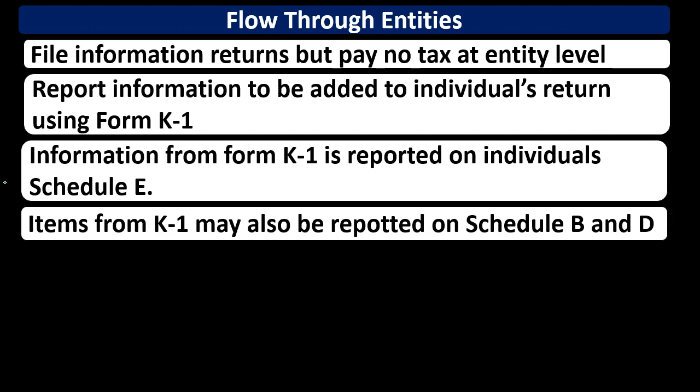There may also be items on the K-1 reported on Schedule B or Schedule D, depending on the circumstances. For example, interest income would be reported on Schedule B, and capital gain information would need to be reported on Schedule D. These are individual schedules used to capture specific types of income flowing through from the entity level via the K-1.